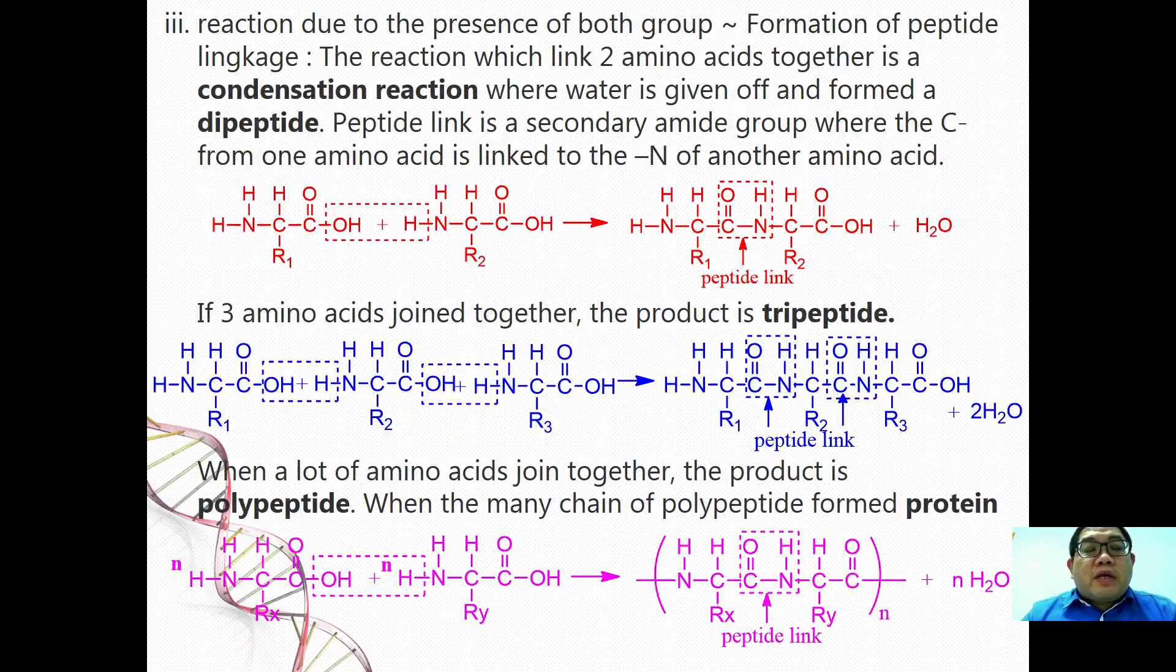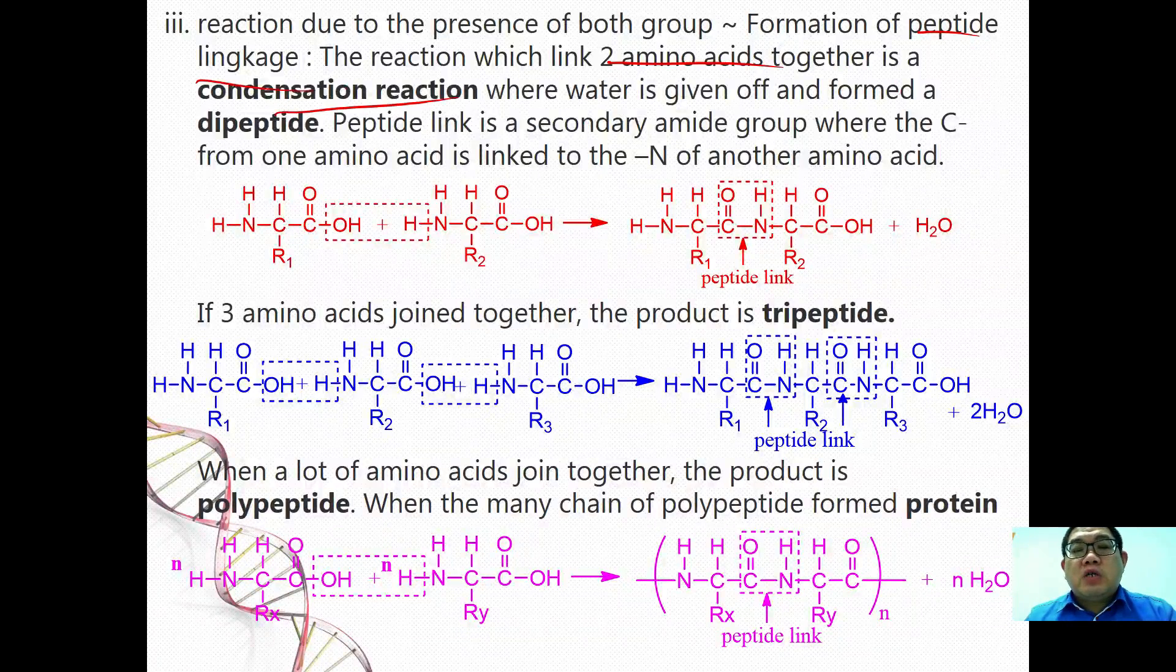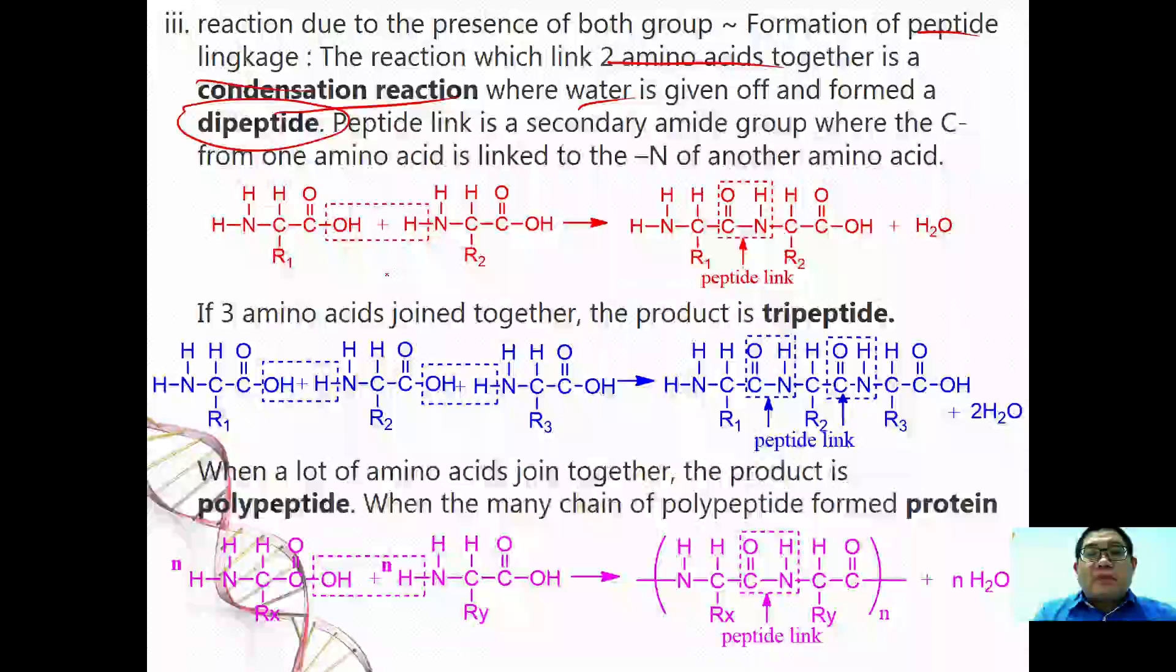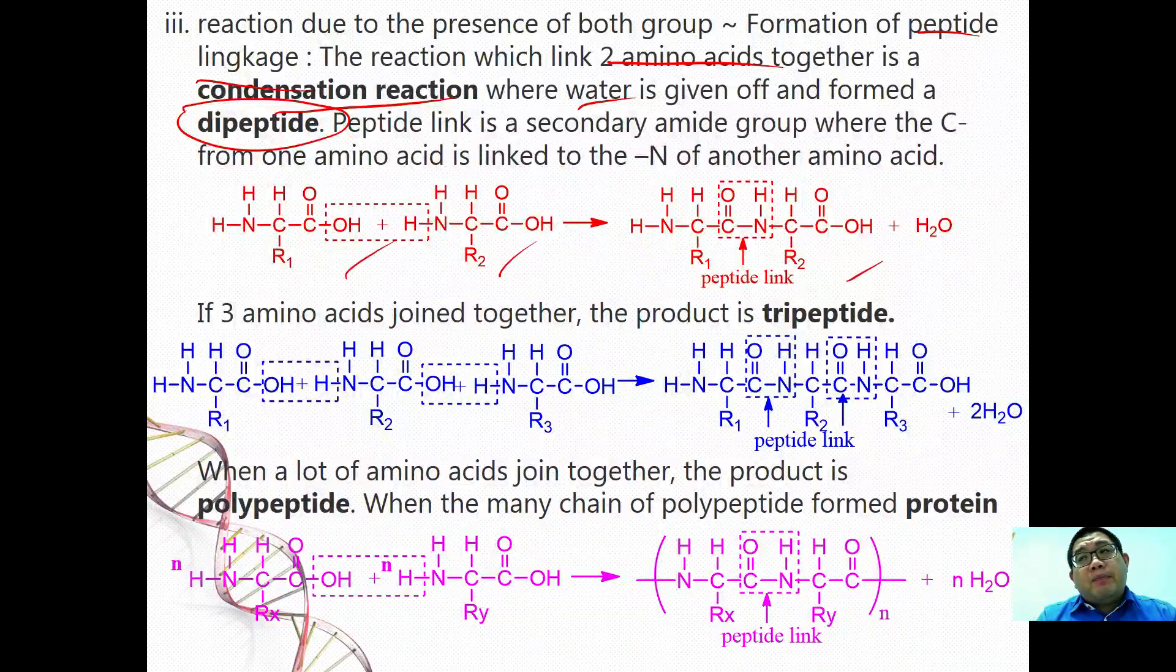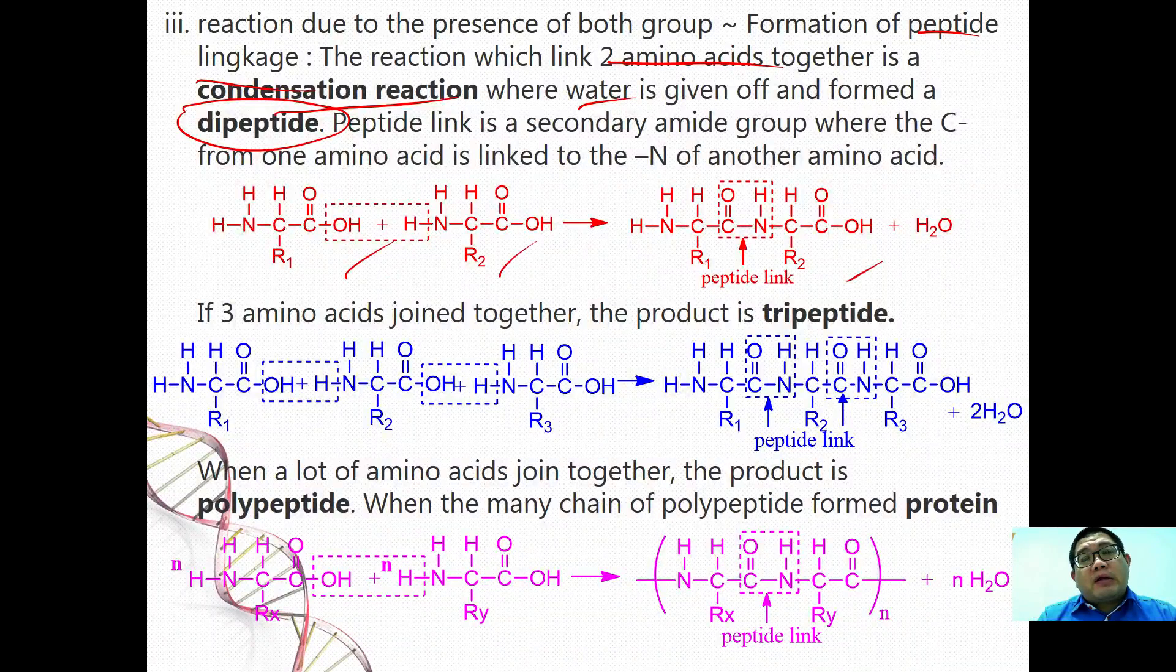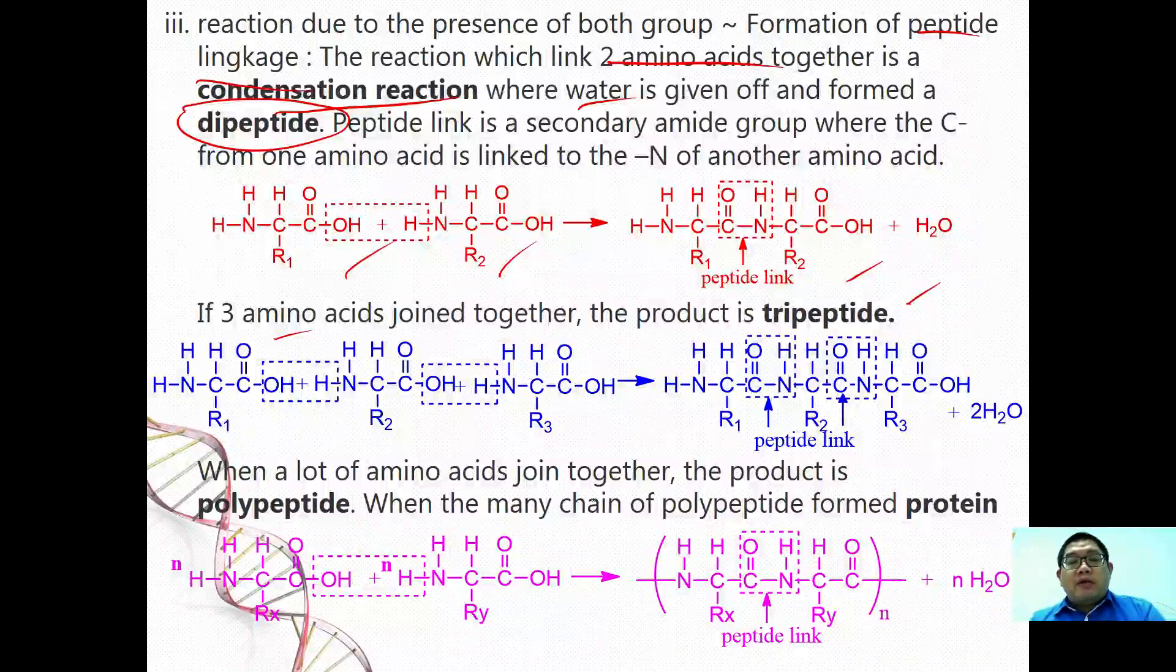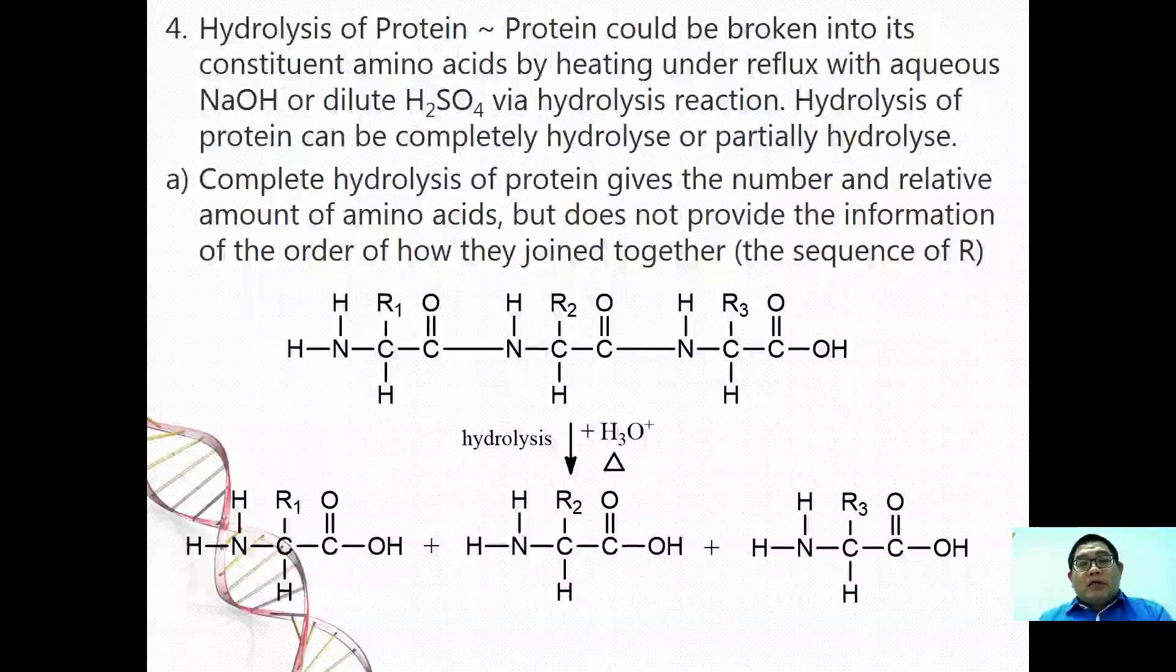The third reaction here, due to the presence of both groups, it can form what is called as a peptide linkage. The reaction which links two amino acids together via condensation reaction where water is given off is called a dipeptide. Dipeptide is because you have two amino acids joined together using this amide bond. With three amino acids we have tripeptide. When many amino acids are joined together, we call them as polypeptide.